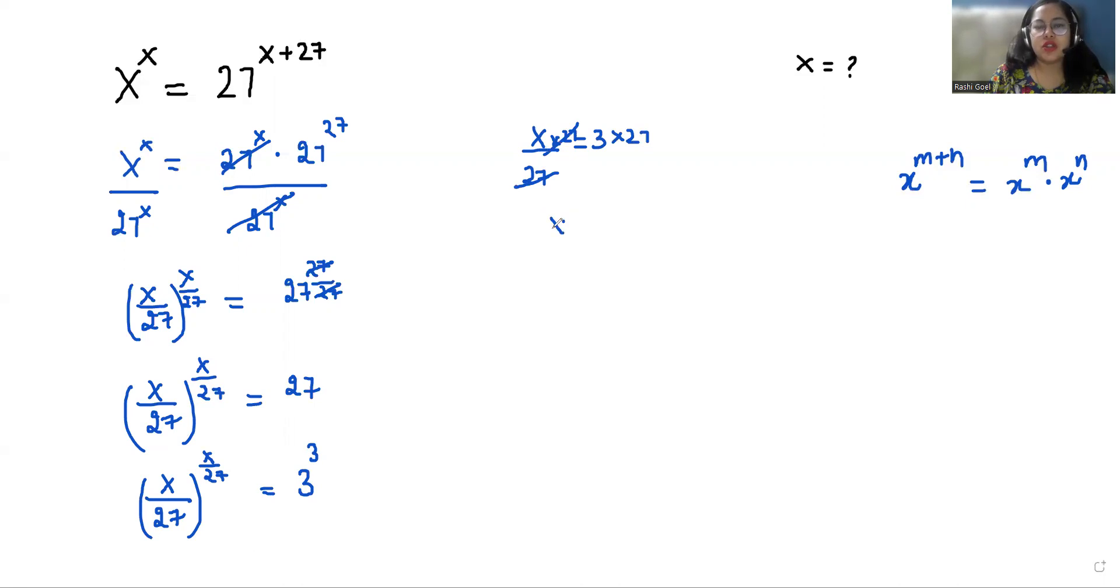So here we can cancel out this, so the value of x is 3 times 27 which equals 81. So the value of x is 81 in this case. I hope it's clear and you find it useful, so please give us a thumbs up and do subscribe to my channel. Stay tuned.